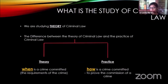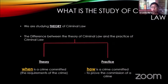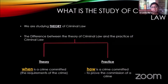When you look at the theory of criminal law, what we're looking at is the question of when is a crime committed, as opposed to the practice of criminal law that deals with the question of how is a crime committed — how to prove the commission of a crime. A person cannot be convicted of a criminal offence unless you can prove beyond a reasonable doubt that he has committed a particular crime.